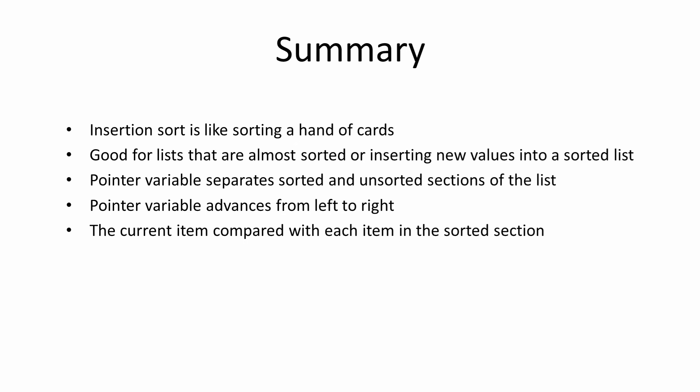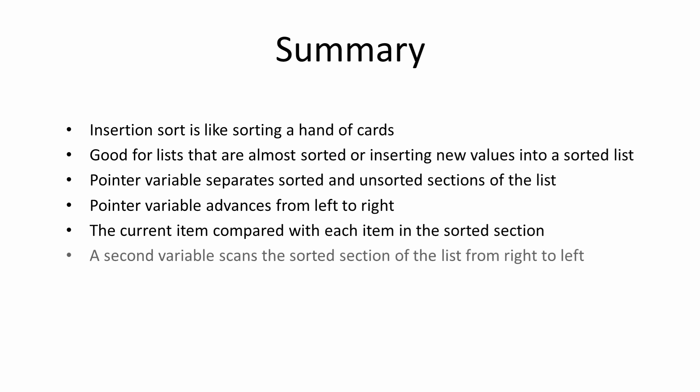Eventually, the correct position for the current item is found. A defining characteristic of the insertion sort is that the sorted section of the list is scanned from right to left. You can therefore recognise the code for an insertion sort because you'll see a variable being decremented within a nested loop. The insertion sort is arguably a little harder to understand than a bubble sort, but it is slightly more efficient and therefore a little faster. With the bubble sort, pairs of data items are repeatedly compared and swapped. There's a lot less unnecessary movement of data with an insertion sort.